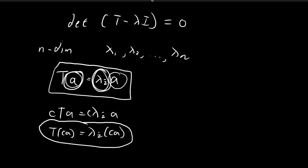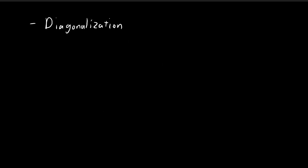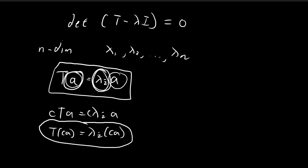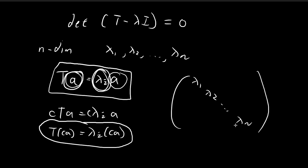Now we're going to introduce the concept of diagonalization. We're going to take our matrix T and change it into a matrix where the diagonals will be equal to the eigenvalues and everywhere else it's going to be equal to zero.